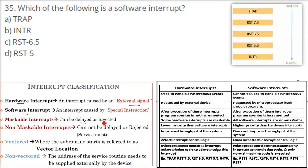There are certain maskable interrupts that can be delayed, rejected, or ignored. There are certain non-maskable interrupts that cannot be delayed or rejected. Trap is a non-maskable interrupt; the others are maskable.